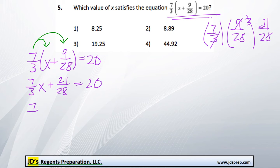Now, 21 over 28, we can simplify. If we divide both of these by 7, we would get 3 quarters instead.